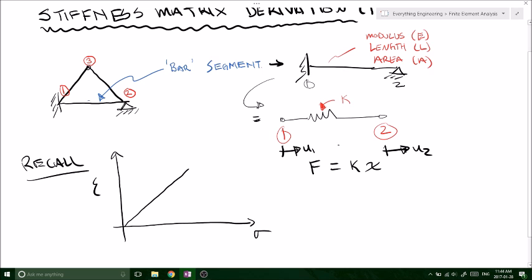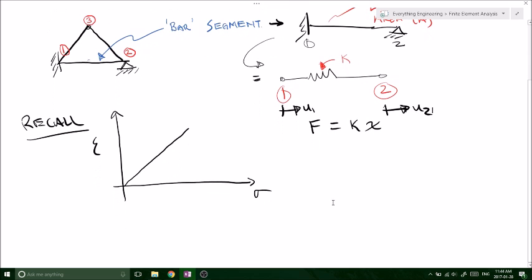U1 and U2 can just be some arbitrary distance moved by some applied force. So from this diagram we know that E is equal to sigma over strain, F over A over delta L over L. So this is our strain, this is our stress.